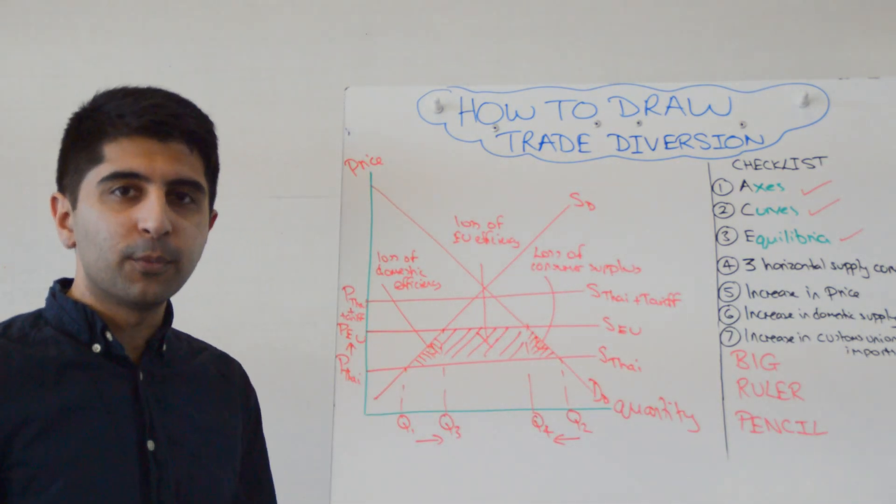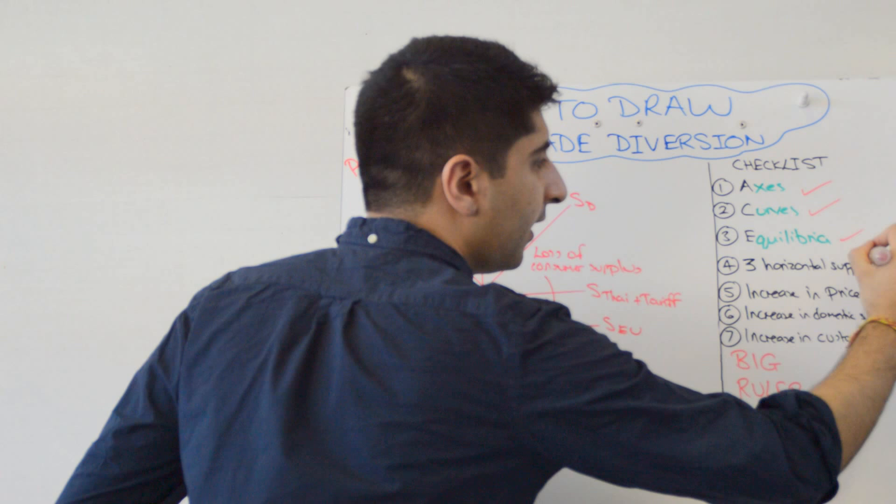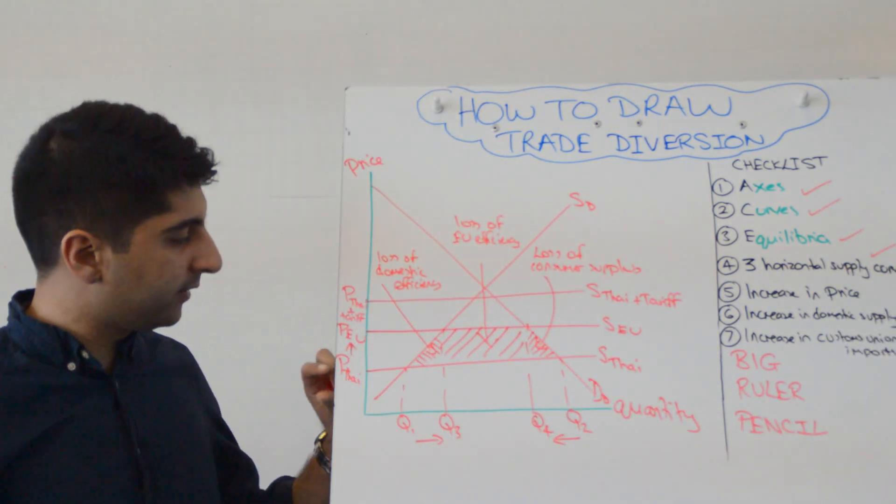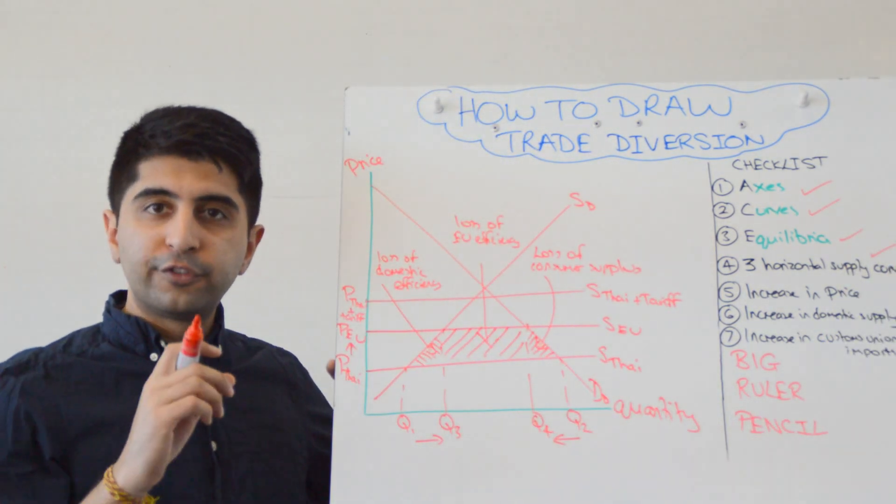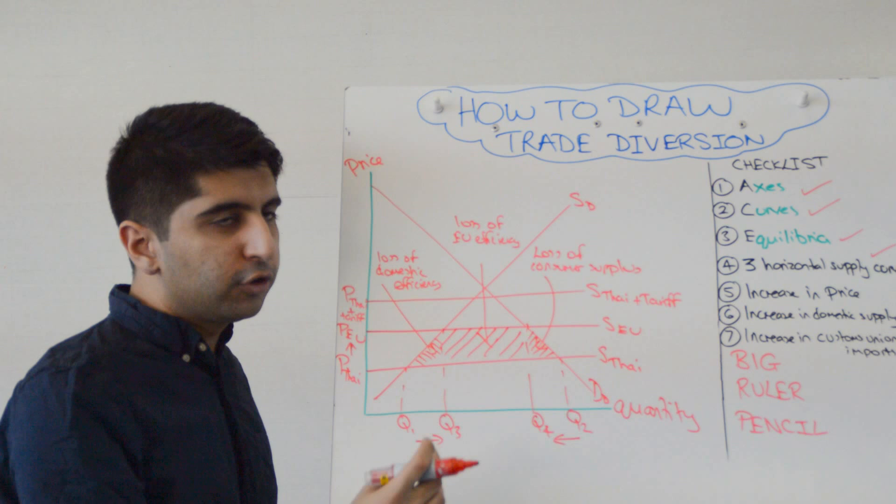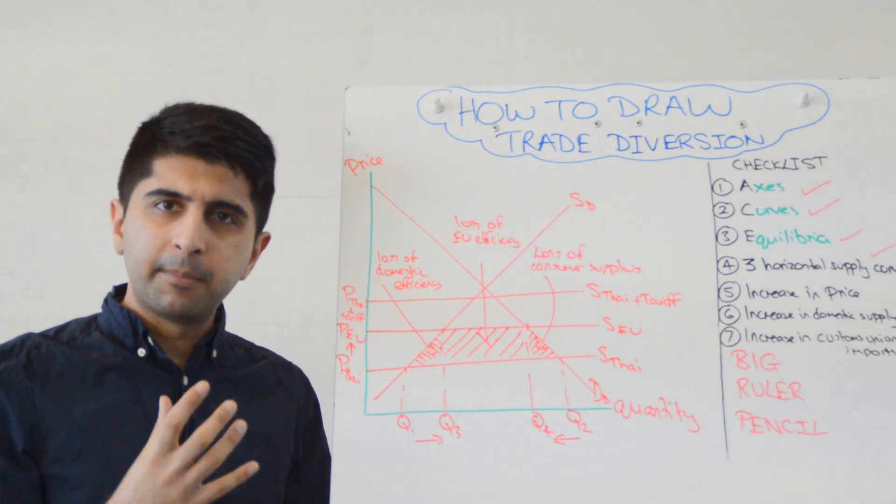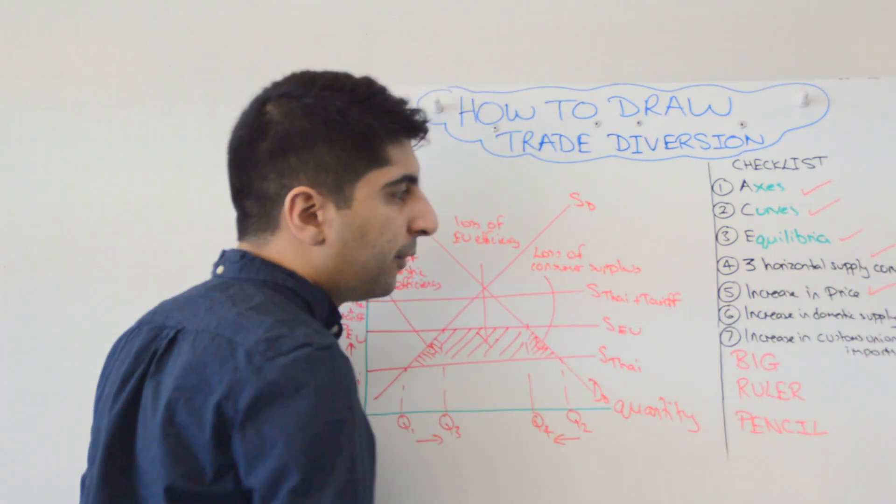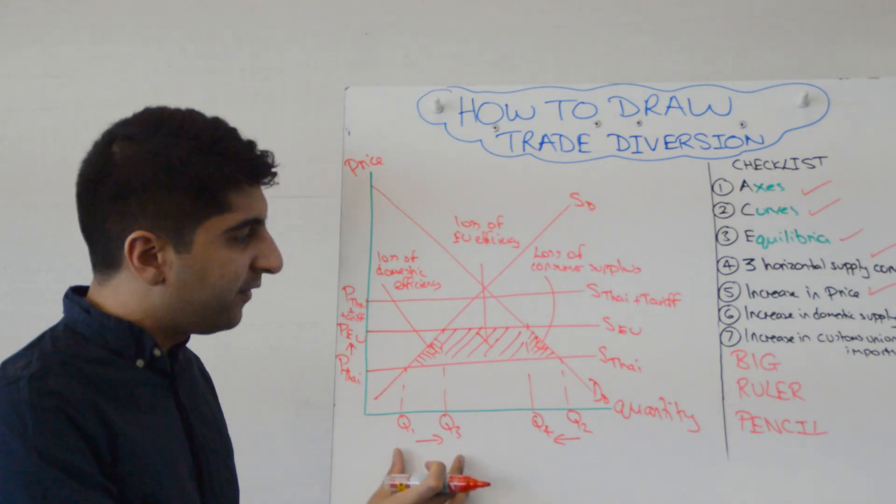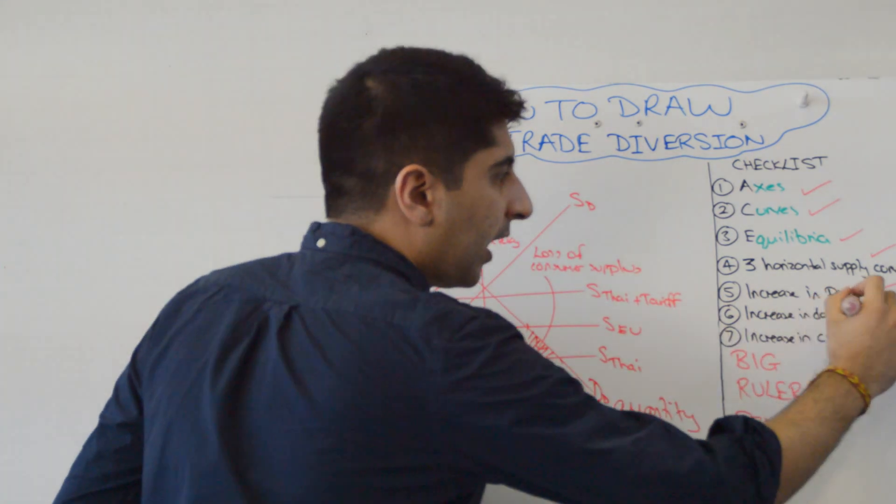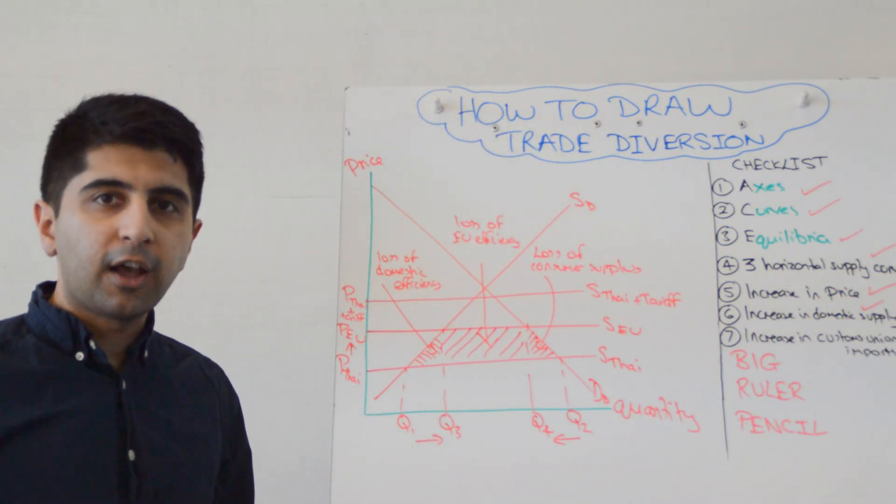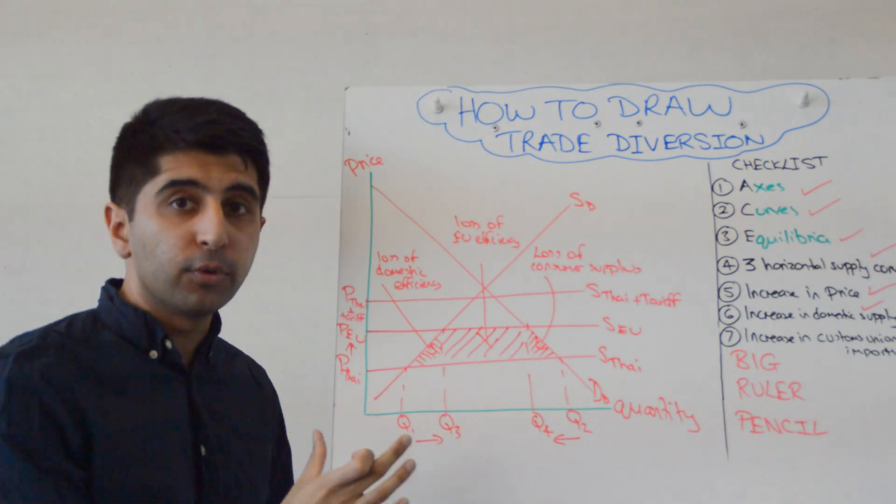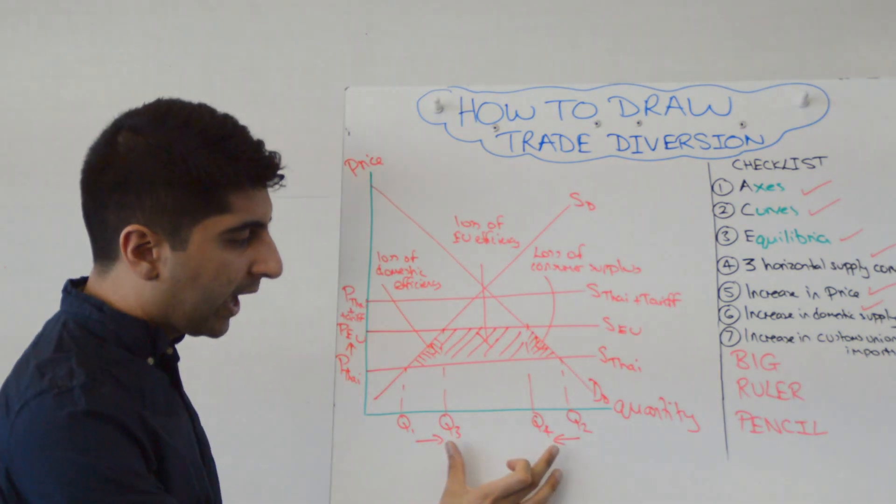Have we drawn our three horizontal supply curves, making it clear why there are three and what they represent? Yep, we've done that nicely as well. Have we shown an increase in price as a result of trade diversion and countries now importing from inefficient producers? Yes, we have. Have we shown an increase in domestic supply and the inefficiency that brings? Yes, we have. Have we shown an increase in customs union imports, i.e. now imports coming in from the EU? Yes, we have.